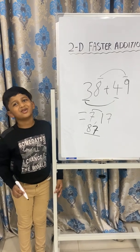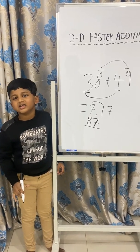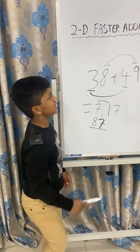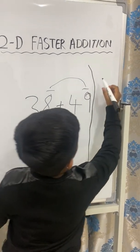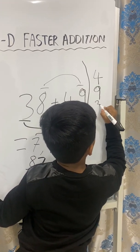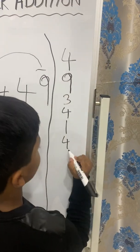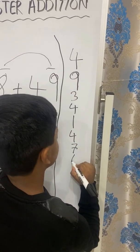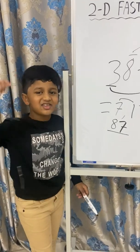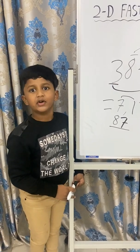Friends, now it is time for question time. I will give you one question and I want you to solve it. Please do post your answers in the comment section below. Now your question is: 1, 4, 9, 3, 4, 1, 4, 7, 6, 4, and 3. Solve this question and post your answers in the comment section below. I will be waiting for your answers.